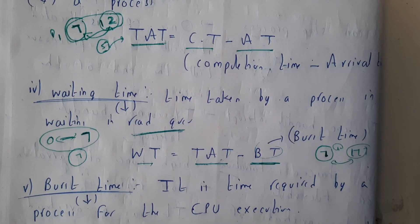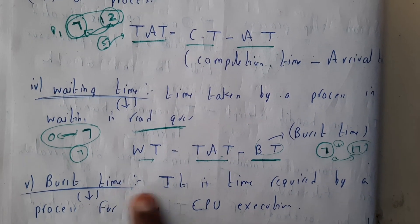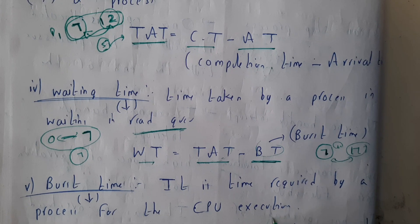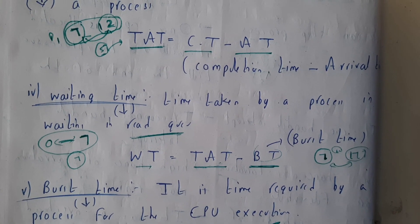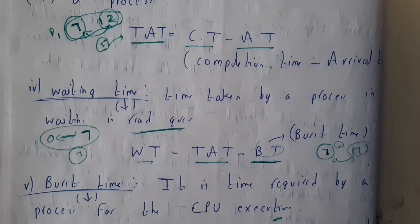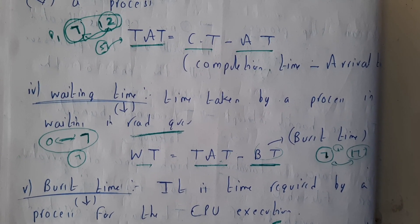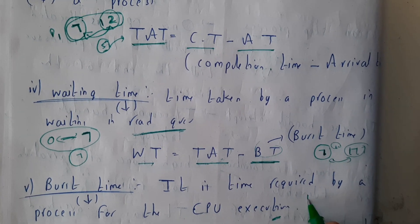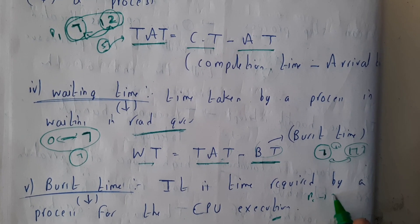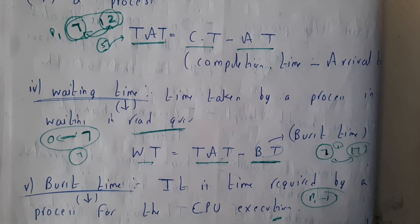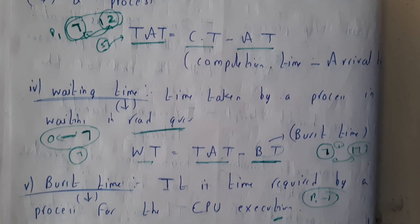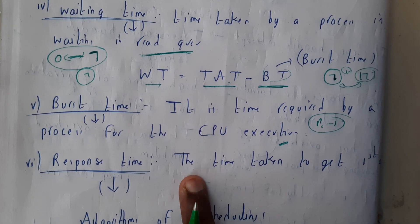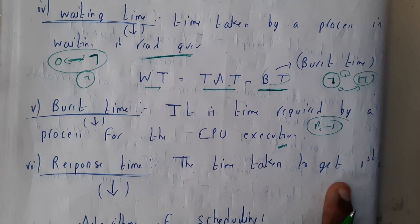Burst time is the time required by a process to complete its execution on the CPU. For example, if process P1 needs 7 seconds of CPU time, then 7 seconds is its burst time.